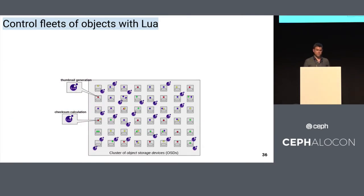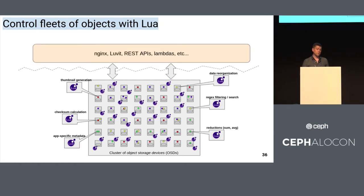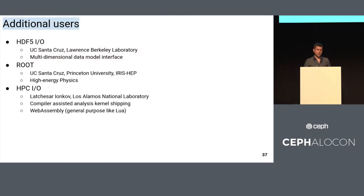What I've shown you is thumbnail generation and checksum calculation — useful and easy-to-explain examples. But you could imagine using this for all kinds of different things: putting a web server in front of it, using it for serverless applications. There are a lot of possibilities. A couple more use cases currently being developed that should be coming online sometime this year: first, an object class implementing HDF5 slicing for multidimensional data, allowing you to efficiently request different subsets of multidimensional data stored in HDF5.